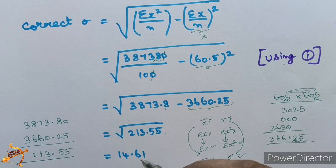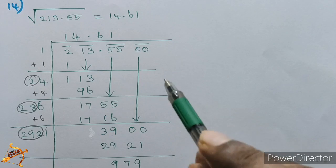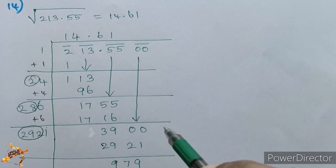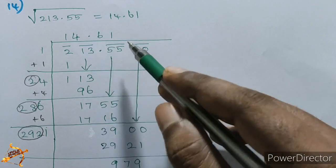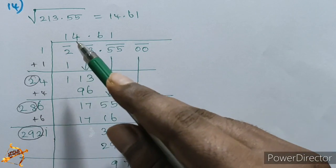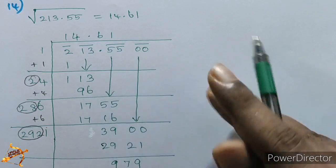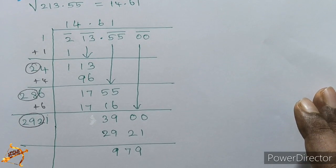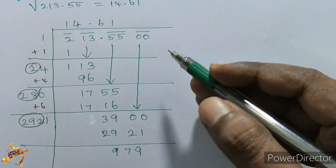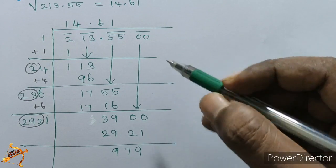If we verify using long division, we look at 213.55 and get 14.618, confirming our answer.